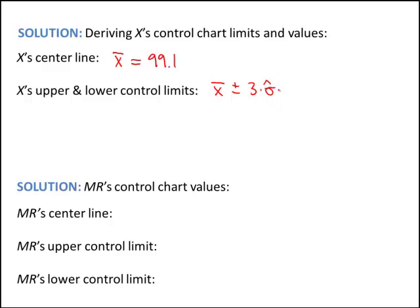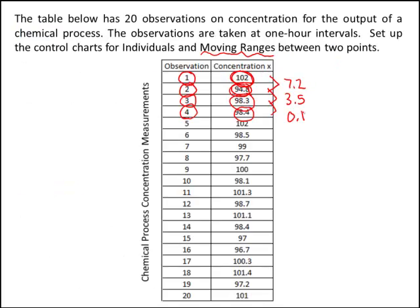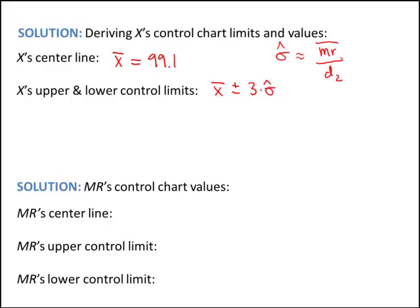I put a hat on sigma because we don't know the true standard deviation of the process — we have to estimate it. There's a relationship between sigma-hat and MR-bar. Sigma-hat equals MR-bar divided by the unbiasing constant D2, where MR-bar is the average of the moving ranges, and D2 comes from a table of variable control chart constants. I've already computed MR-bar by averaging the 19 moving range values — it is 2.59. And D2 for two consecutive points uses N=2 from the table, giving D2 = 1.128.